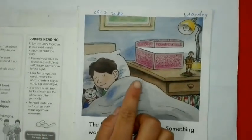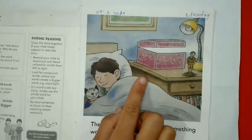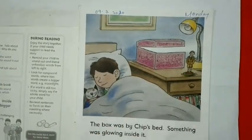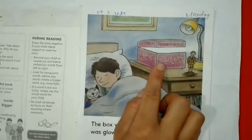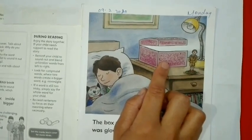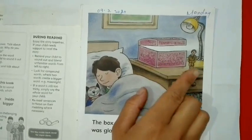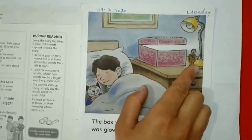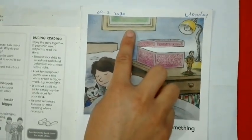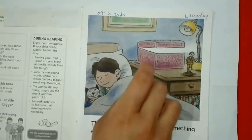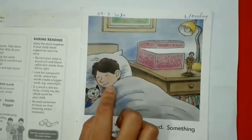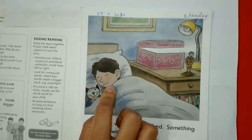Do you know which picture is this? This is the picture of a bedroom. Do you know what is this? This is the box. What is this? This is a lamp. And what is this? This is a scenery. Who is sleeping on the bed? Chip is sleeping on the bed.